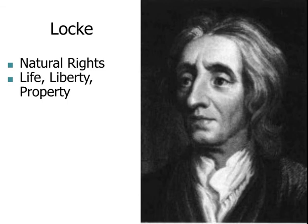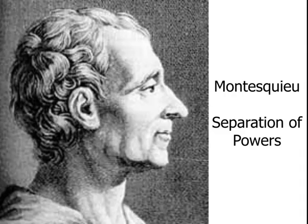John Locke came up with the idea of natural rights — rights that people were born with. He said that everybody had a right to life, liberty, and property, and if any of those rights were infringed upon, he would agree with Rousseau that the contract between the leader and the people had been broken and that the people could rebel.